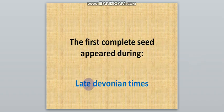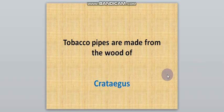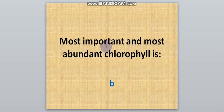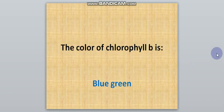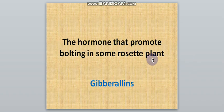The first complete seed appeared during late Devonian times. Tobacco pipes are made from the wood of Crataegus. The most important and most abundant chlorophyll is chlorophyll A. The color of chlorophyll B is blue-green.